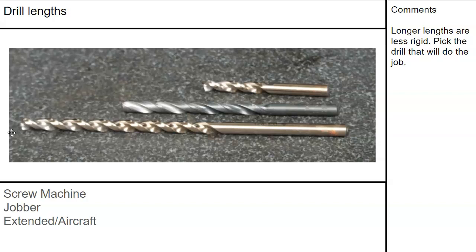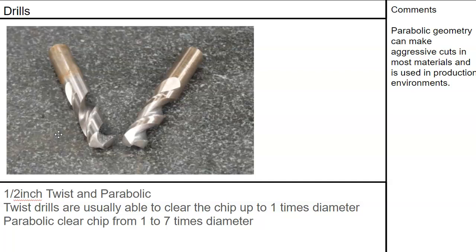Jobber length is a little bit longer, then extension. You can get drills that go quite long, but as you get longer, they'll want to wobble and make the hole a little oversized. There is a process where you start with a screw machine length to get the base started, then go to Jobber length using all of its flute, then step up to drill really deep holes. For twist versus parabolic, there's a difference in the tip geometry and chip ejection — parabolics are much more aggressive and are a production drill. We typically try not to go over one times the diameter per peck for standard drills, whereas the parabolic can go one to seven times the diameter depending on material — it can drill a very accurate hole very fast, but it costs more.